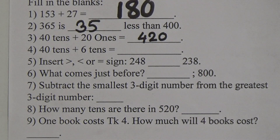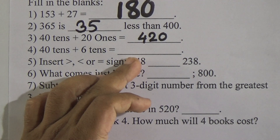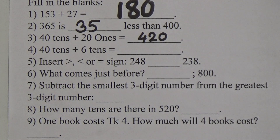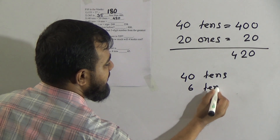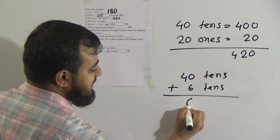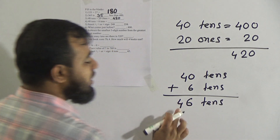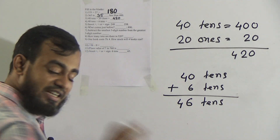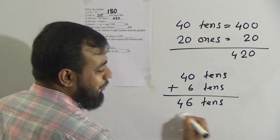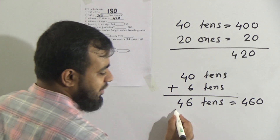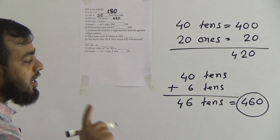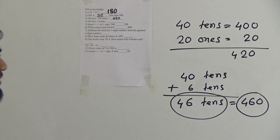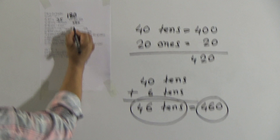Question number 4: 40 tens plus 6 tens equals how much? Both units are in tens. Since both are tens, we can add directly: 40 plus 6 gives 46 tens. The answer is 46 tens. Or you can convert: 46 tens equals 46 and a 0, which is 460. You can write either 46 tens or 460 — any one answer. I am writing 460.